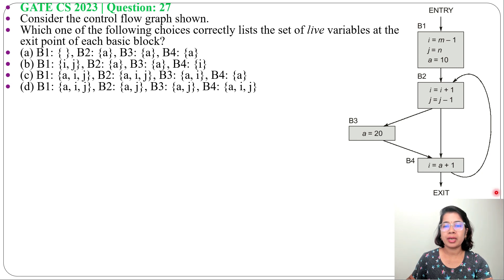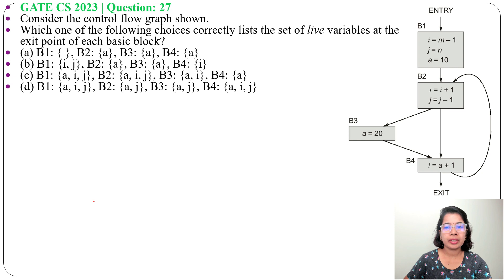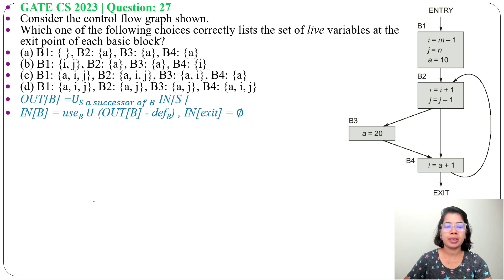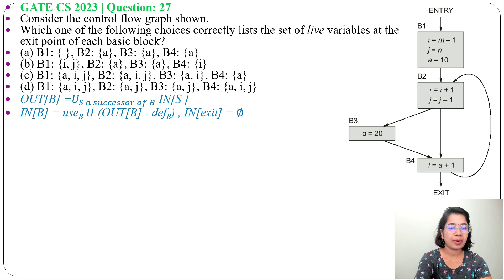It's asking the set of live variables at the exit point, which means it's asking about 'out'. Out is the live variable at the exit, while 'in' is the live variable at the entry. We need to find out for every basic block. Out equals the union of its successors' in, while in equals use(B) union (out(B) minus def(B)), and in of exit equals phi. Before finding out and in for each block, first you need to find use and def for each block.